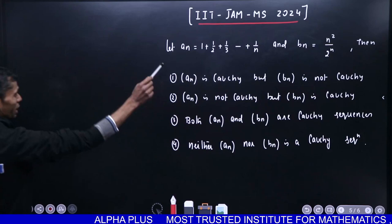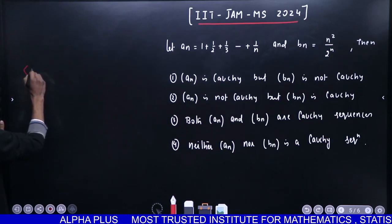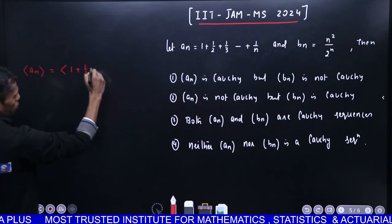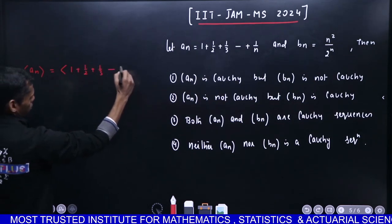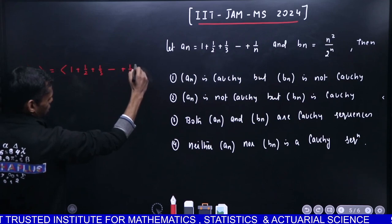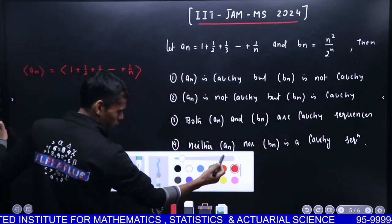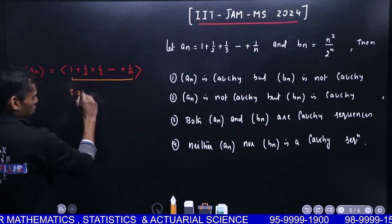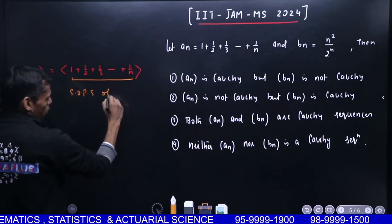Now looking at AN carefully, the sequence AN is 1 + 1/2 + 1/3 + ... + 1/n. If you are carefully noticing, this is SOPS of a series.